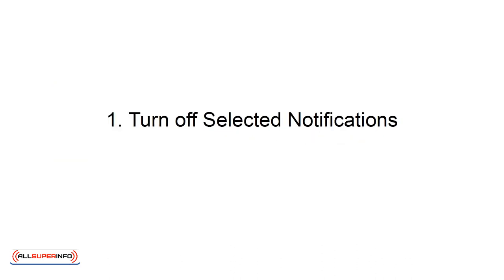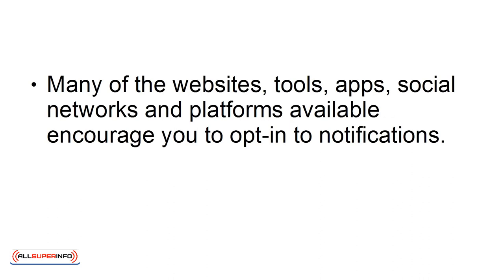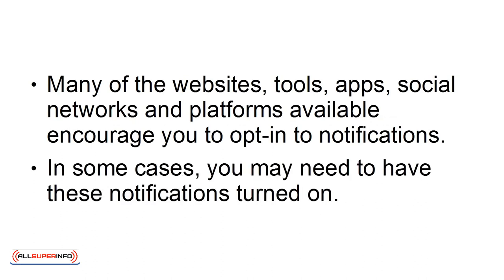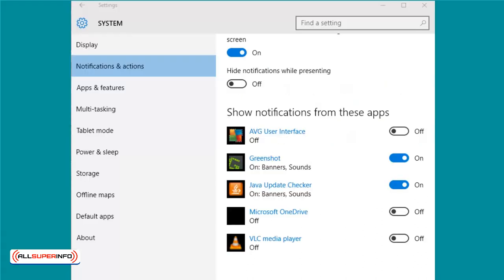1. Turn off selected notifications. Many of the websites, tools, apps, social networks, and platforms available encourage you to opt in to notifications. In some cases, you may need to have these notifications turned on. However, in most cases, you probably don't. To begin the process of reducing information overload, start by turning off notifications on your device that are not necessary for your personal or professional needs.